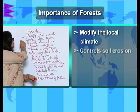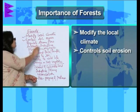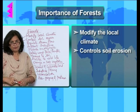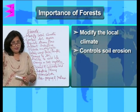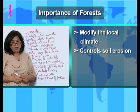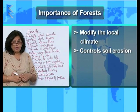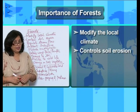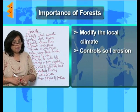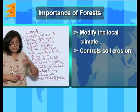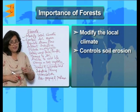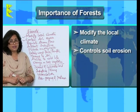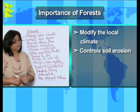Next, forests control soil erosion. If there is heavy rainfall, the soil could get washed off, but it is the forest which controls such soil erosion.